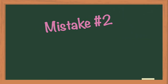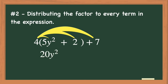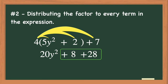Mistake number two: distributing the factor to every term in the expression. Let's look at the same expression again. This time the mistake that students make is to distribute the factor of 4 to every term in the expression. Doing this will give you 20y squared plus 8 plus 28. Next you would combine the like terms of positive 8 and positive 28 to get positive 36. Then when you bring down the 20y squared, your expression would be 20y squared plus 36, which is also not correct.